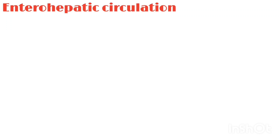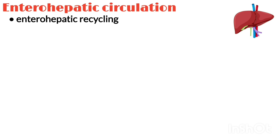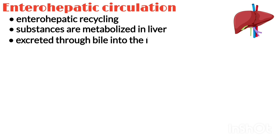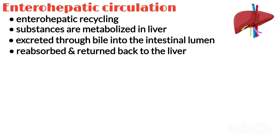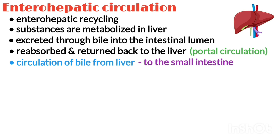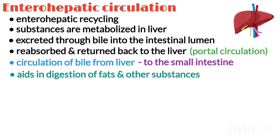Enterohepatic circulation, also known as enterohepatic recycling, refers to a process in which substances that are metabolized in the liver, excreted through bile to get into the intestinal lumen, then reabsorbed and returned back to the liver through the portal circulation. In simple words, enterohepatic circulation refers to the circulation of bile from the liver where it is produced to the small intestine where it aids in digestion of fats and other substances, back to the liver.